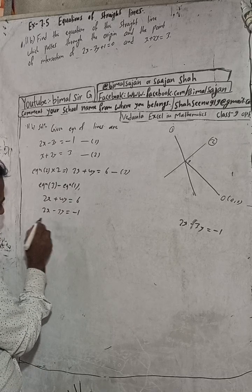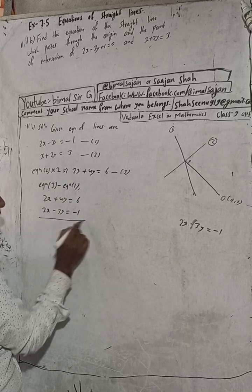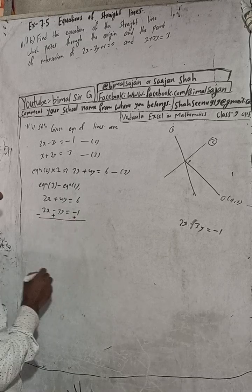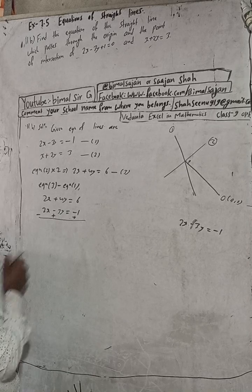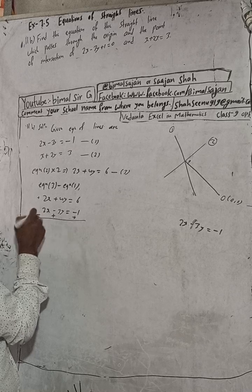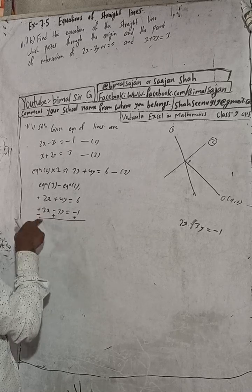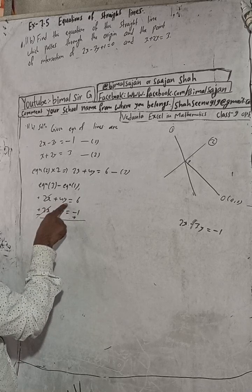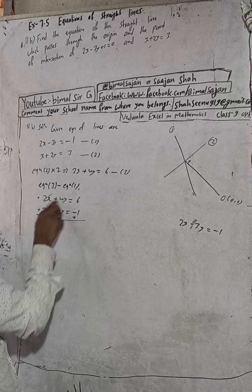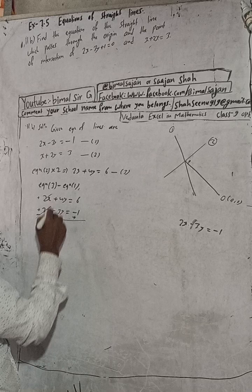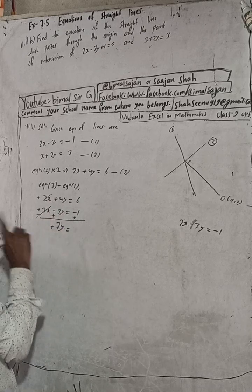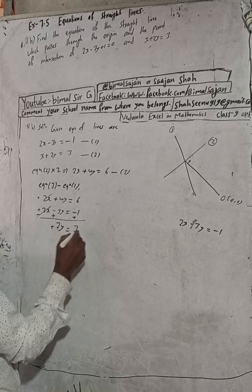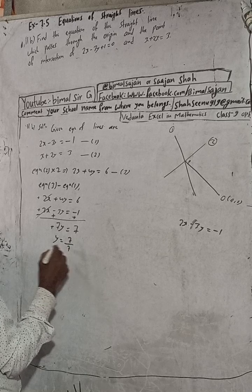Subtracting means we change the sign of equation 1. The 2x terms cancel. We have +4y and the minus of -3y gives +3y, so 4y + 3y = 7y. On the right side, 6 minus (-1) = 6 + 1 = 7. So 7y = 7, therefore y = 1.